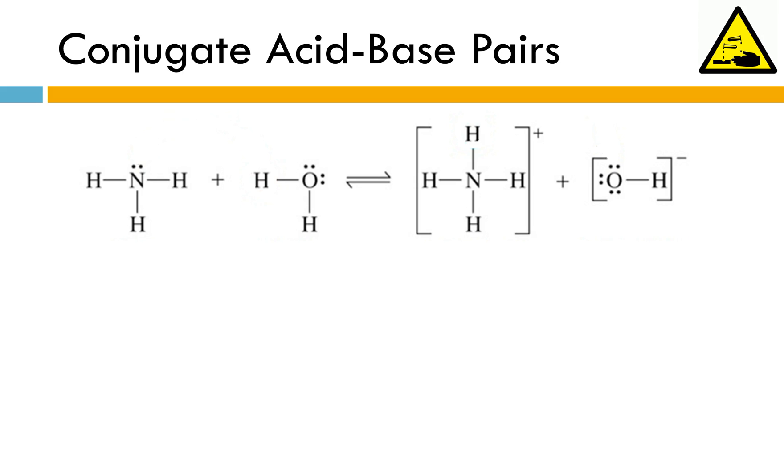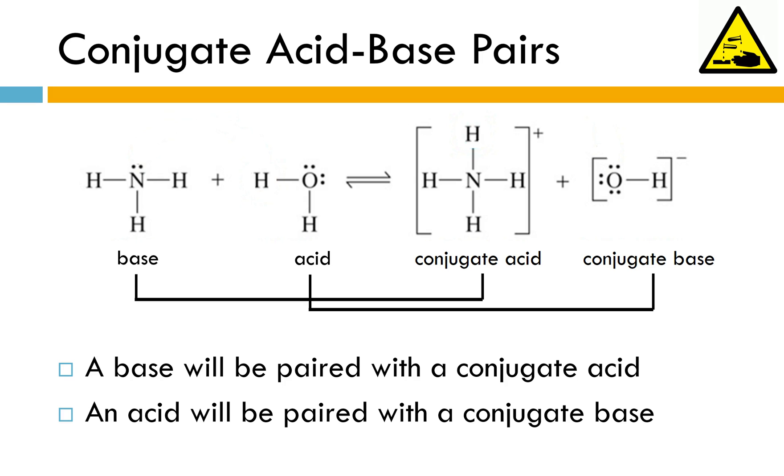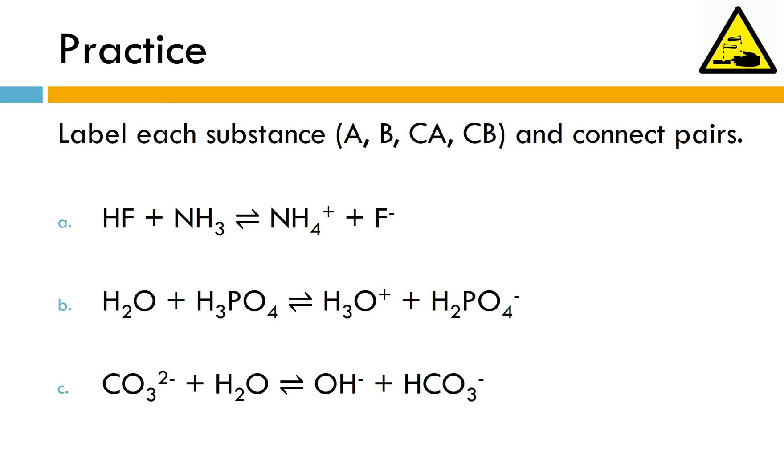So let's talk about conjugate acid-base pairs. We've already identified all of those as acids and bases and conjugate acids and bases. When we're talking about conjugate acid-base pairs we take a base and pair it up with its conjugate acid. So in this case ammonia its conjugate acid would be ammonium and an acid gets paired with its conjugate base. So our acid in this case is water and its conjugate base is hydroxide. And really they just differ from one another by just a single proton.